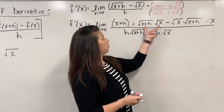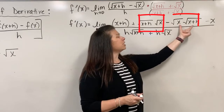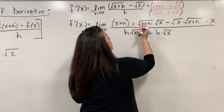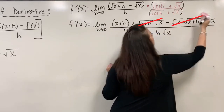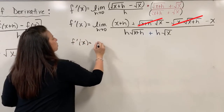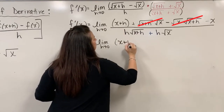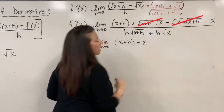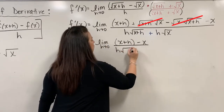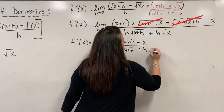All of that is divided by the denominator. I still have an h that needs to be distributed over square root of x plus h as well as square root of x. So in my denominator I have h times square root of x plus h, plus h times square root of x. Now I recognize that the middle terms — plus square root of x plus h times square root of x, and minus the same thing — cancel out. So what's left in my numerator is simply x plus h minus x.